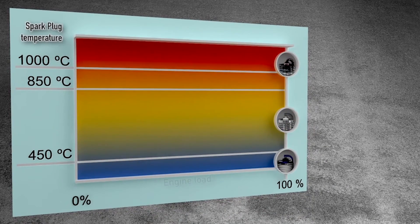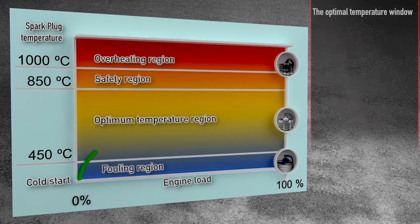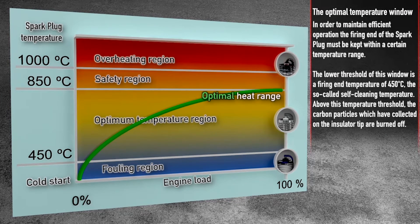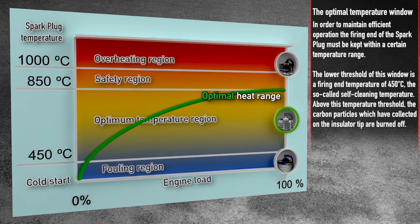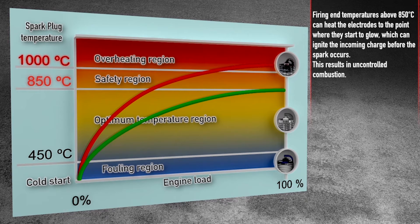In order to maintain efficient operation, the firing end of the spark plug must be kept within a certain temperature range. The lower threshold of this window is a firing end temperature of 450 degrees Celsius, the so-called self-cleaning temperature. Above this temperature threshold, the carbon particles which have collected on the insulator tip are burned off.